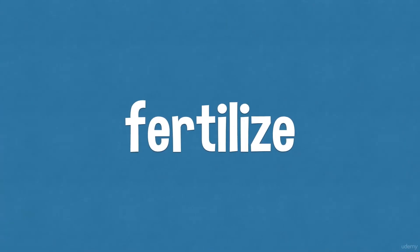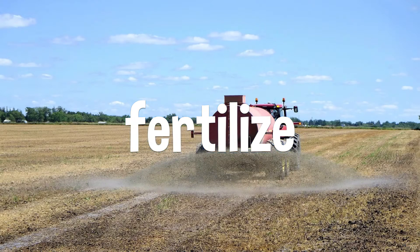Your next word is fertilise. In a human — in fact in any mammal — when the female of the species gets fertilised, she gets pregnant. When the sperm from the male joins with the female's egg, the egg becomes fertilised and the female becomes pregnant. Plants are similarly fertilised when pollen is transferred from the male parts of one flower to the female parts of another flower.